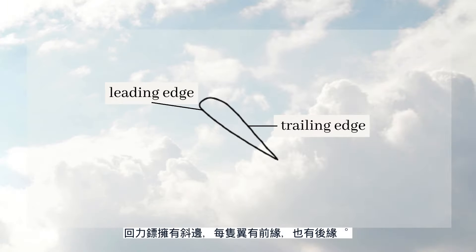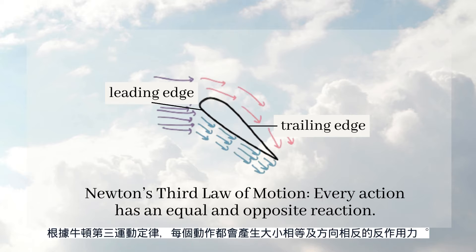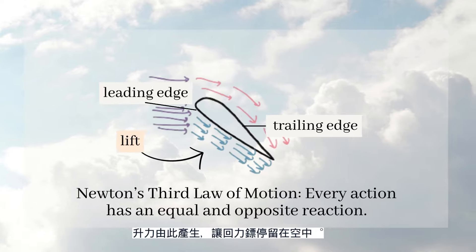A boomerang has beveled edges. One wing is the leading edge and the other is the trailing edge. Air flows over the leading edge and pushes downward on the trailing edge. According to Newton's third law of motion, a reaction has an equal and opposite reaction, so upward lift is generated, which keeps the boomerang in the air.